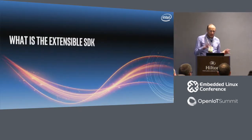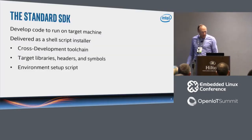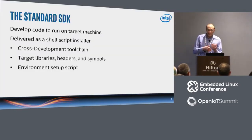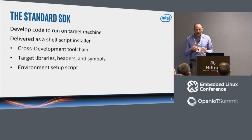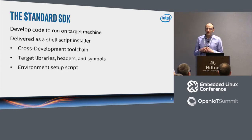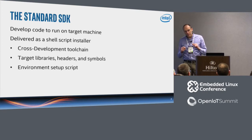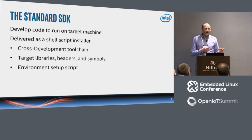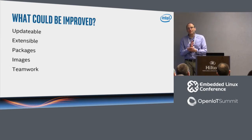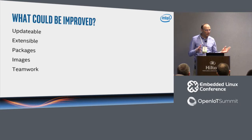What is the Extensible SDK and why did it come into fruition? We'll start by reference to the standard SDK. As you'll know, it is designed to develop code to run on a target machine — a standard cross development approach. It was delivered as a shell script installer, giving you the host toolchain, all the libraries, symbols, and stuff that would be built and deployed on the target, plus an environment setup script to invoke the correct compiler, linker, and those tools. That's been around for five-plus years.